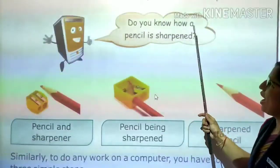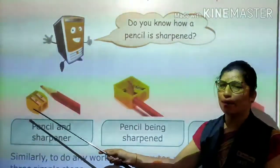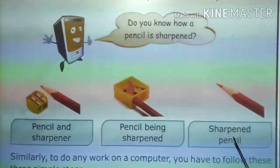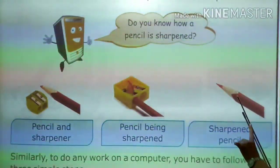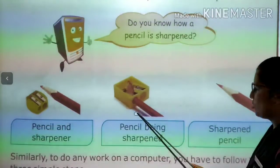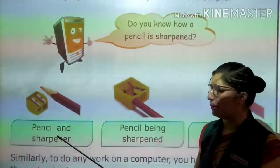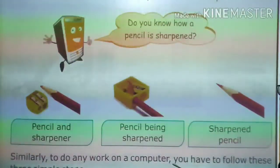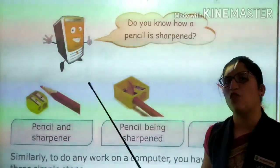Do you know how a pencil is sharpened? When you put a pencil into a sharpener, it sharpens it and you get a sharpened pencil. Similarly, on a computer you have to follow these three simple steps: input, process, and output.